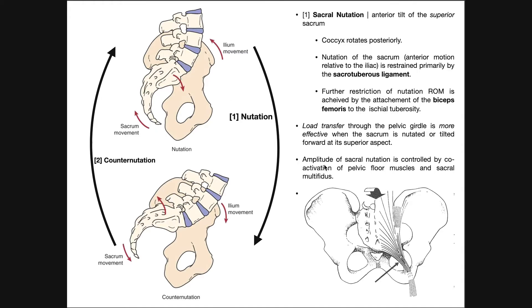Additionally, there is a little bit of sacral nutation, maybe about two degrees that occurs, but the amplitude of that sacral nutation, even within that range, can be controlled and modulated by co-activation of some of the pelvic floor muscles and the sacral multifidus. But the point is, generally what you would need to know here is what nutation is, and also that it's restricted mainly by the sacrotuberous ligament.